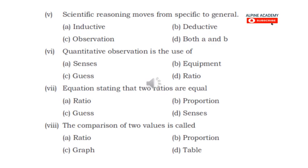Question 6: quantitative observation is the use of what? We know that quantitative observation is used with equipment — different methods of equipment such as stopwatch, flask, measuring tape, etc. In the book there are qualitative sensors also mentioned. So for the quantitative question, the answer is B.